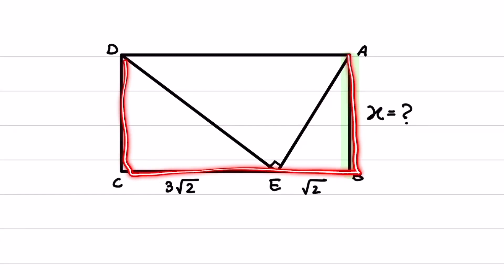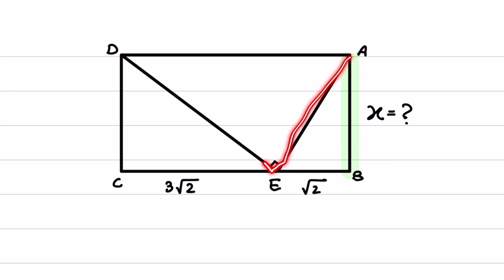The rectangle ABCD is given, also the length of BE and EC is given, and we know that AED is a right triangle. The question asks for the length of AB, which is defined as X.